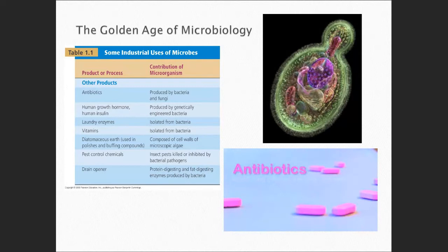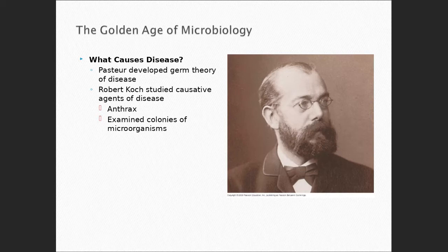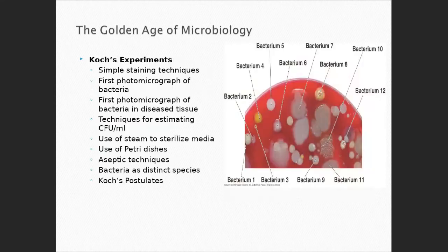The most important scientist in microbiology, in my opinion, was Robert Koch. He was a physician working with infections in a rural community. He was noting that anthrax was killing a lot of animals and causing problems in humans, and he found a way to recognize what that organism was. He did a lot of things.